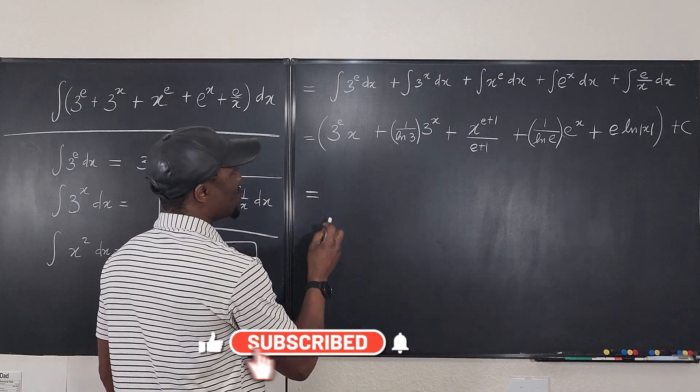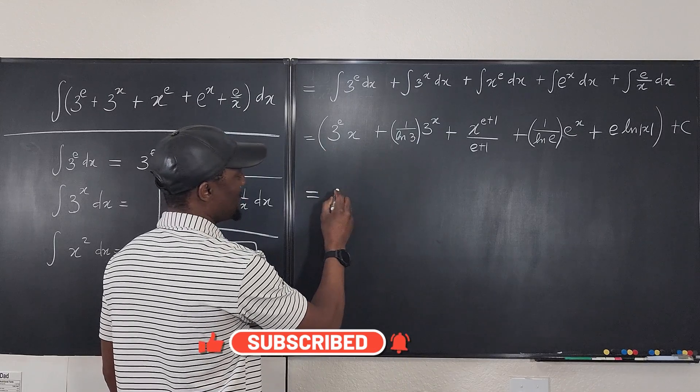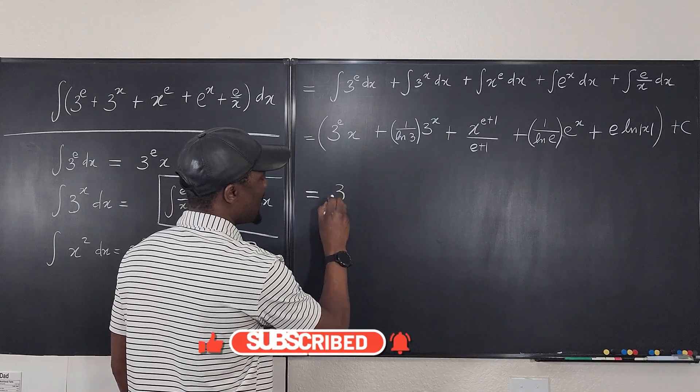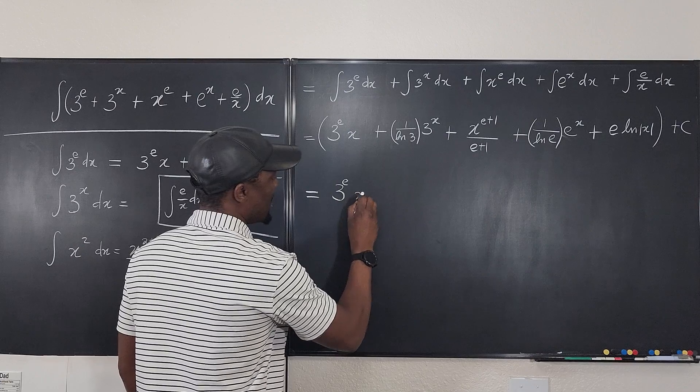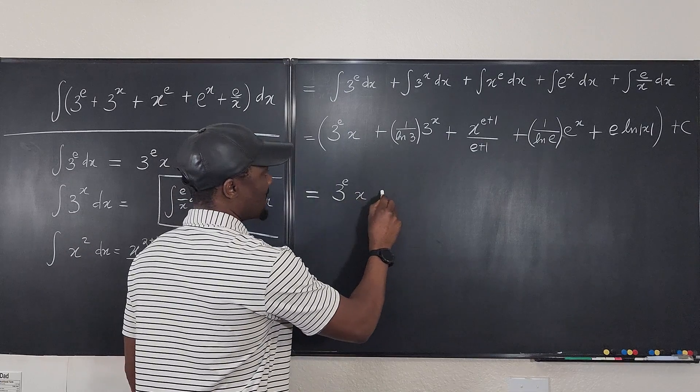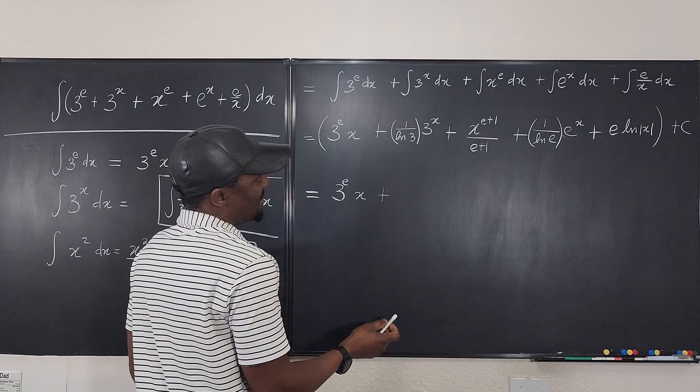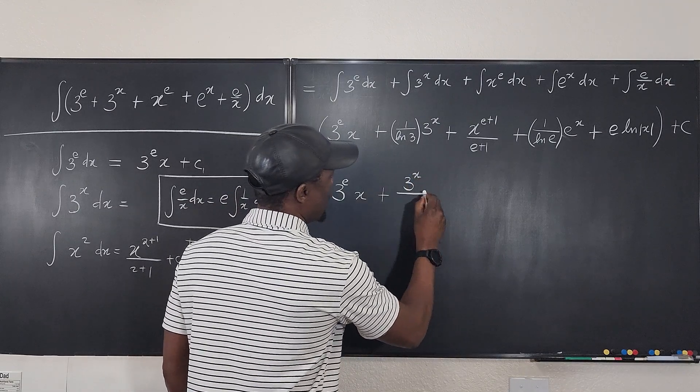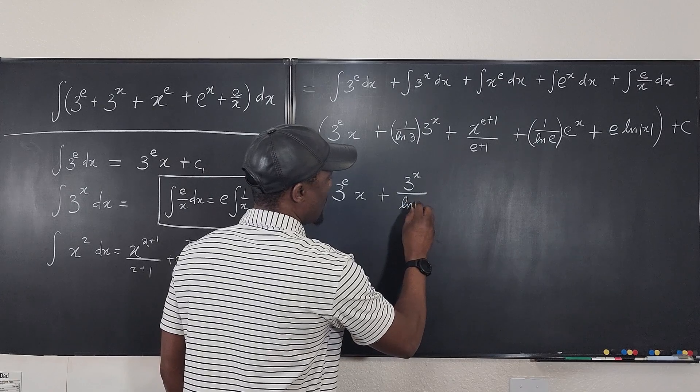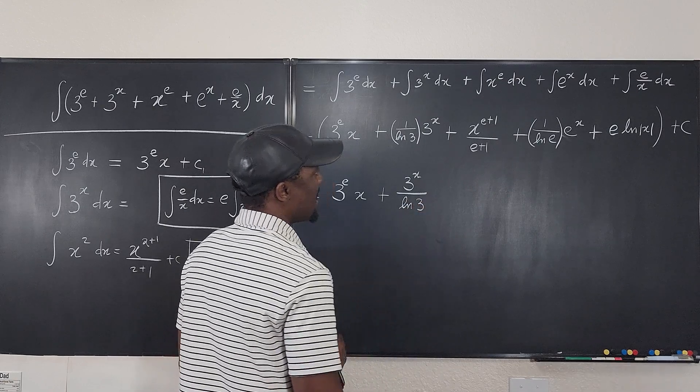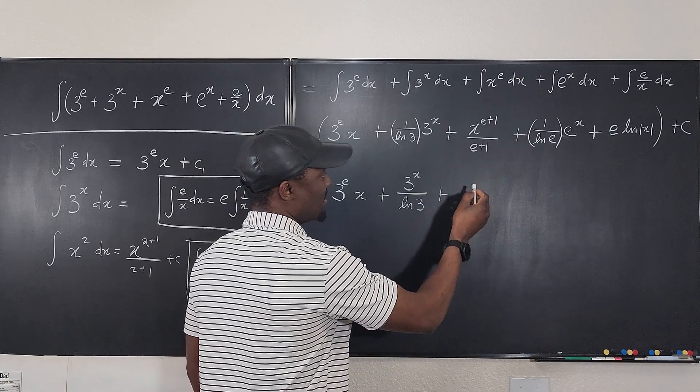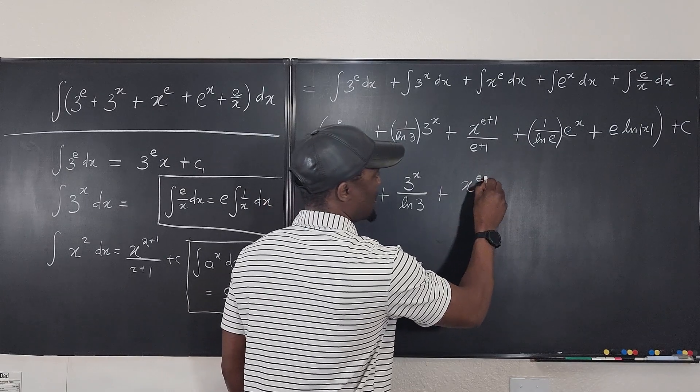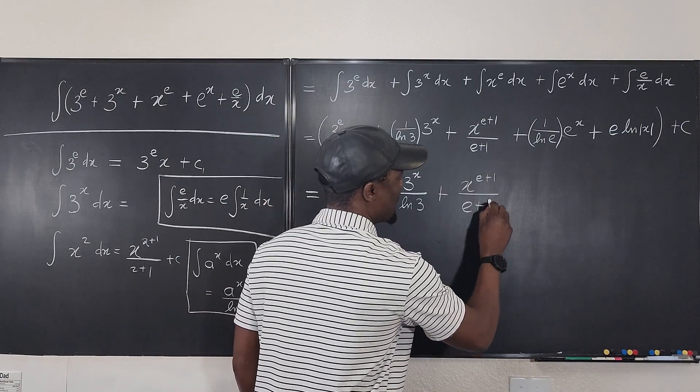Yeah, let's just do that. So this is going to be, there's no further simplification. So this is 3 raised to power e times x plus, there's no further simplification. I can just write this as 3 to the x over the natural log of 3. Here, there's no simplification. It's x to the e plus 1 over e plus 1.